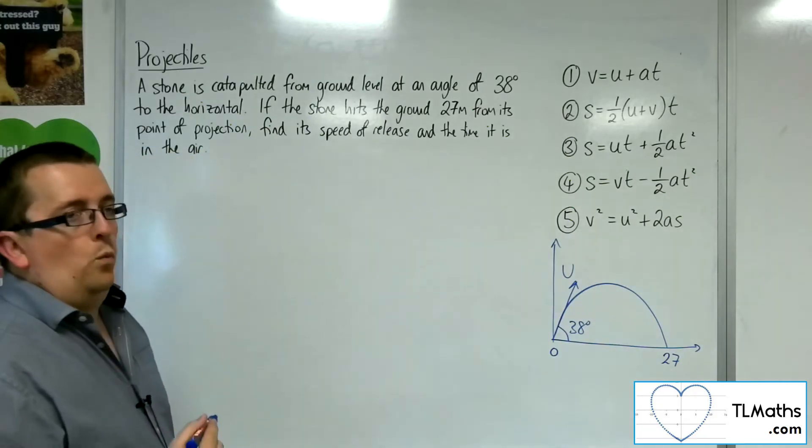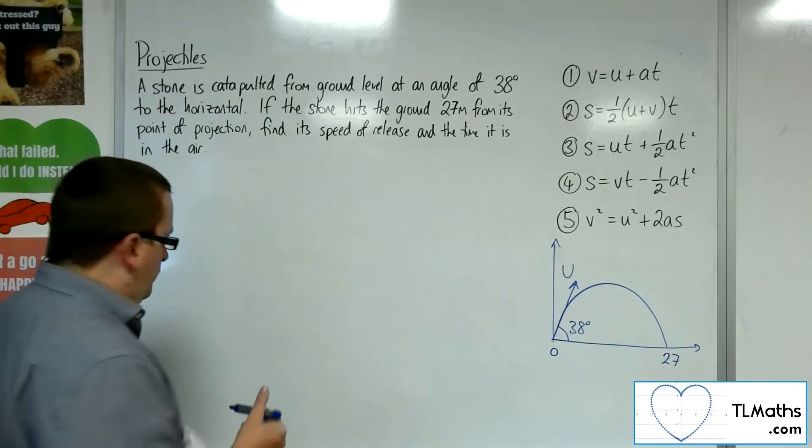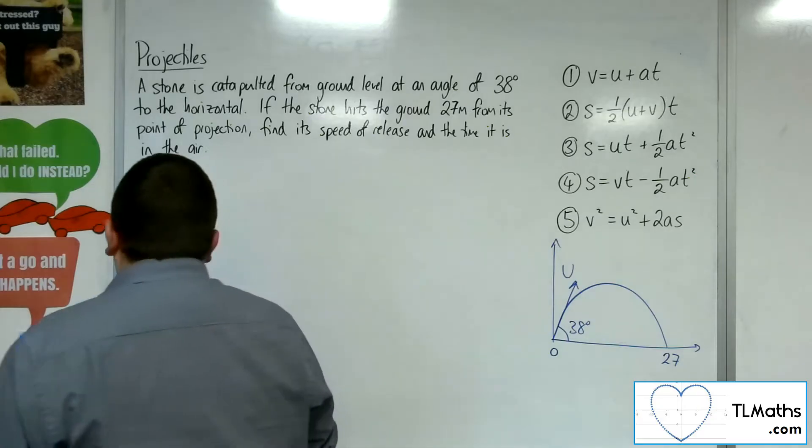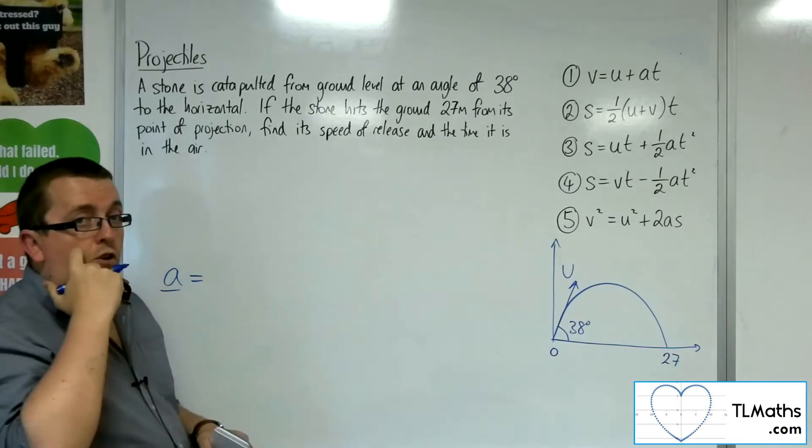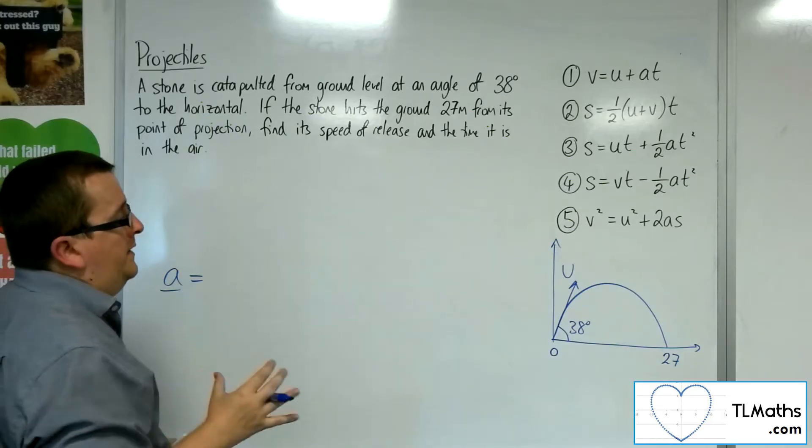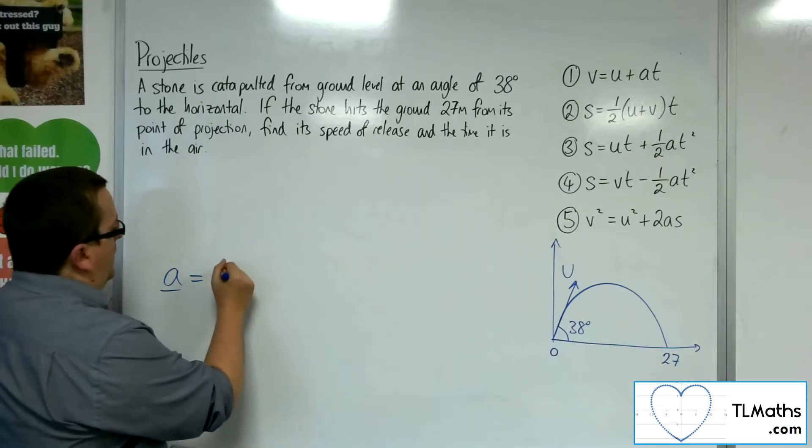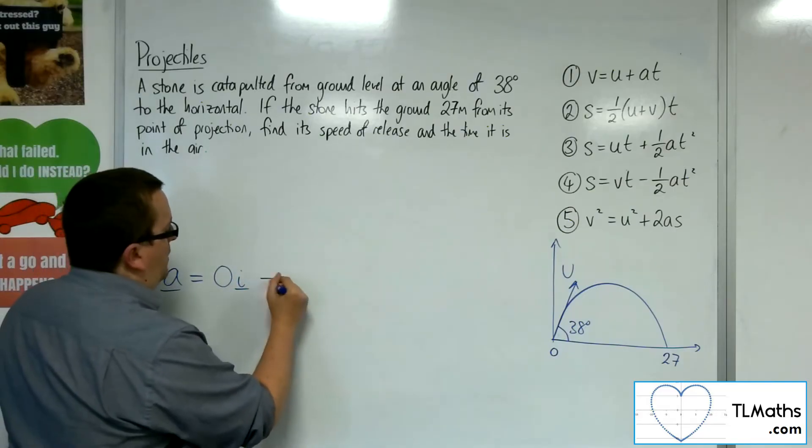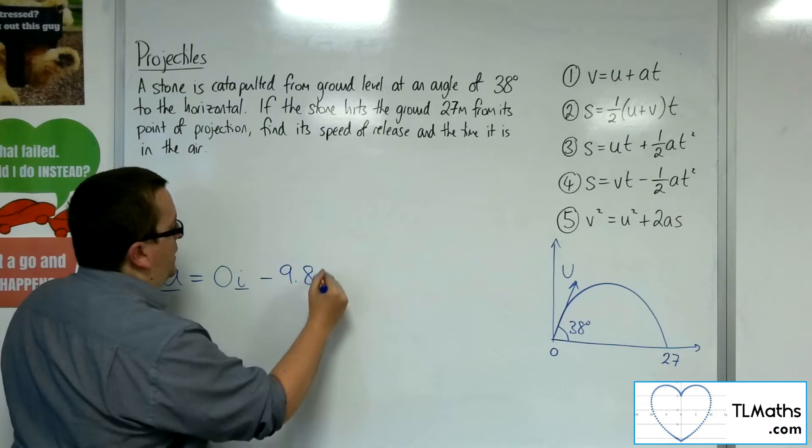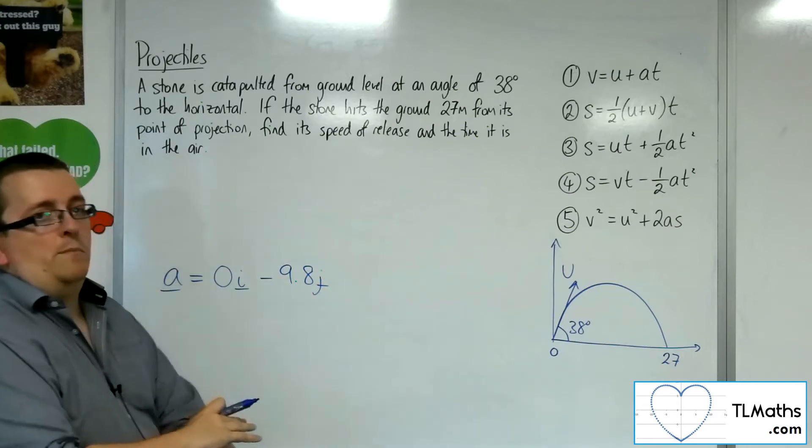So that's what's going on. Acceleration then, the acceleration vector. Now we know that it's not accelerating in the horizontal direction. It's only going to be accelerating in the vertical direction under gravity. So minus 9.8j.